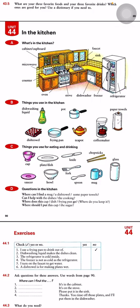Things you use in the kitchen: dish washing liquid, dish towel, frying pan, pot, teapot, coffee maker, and paper towels. Things you use for eating and drinking: cup,